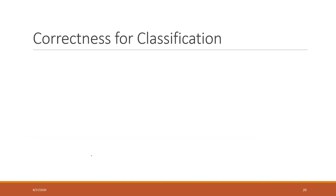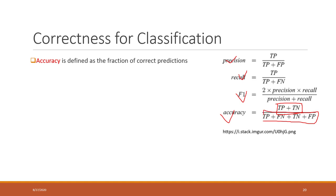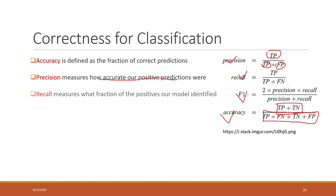Based on the confusion matrix, we can calculate several measures: accuracy, precision, recall, and F1 score. Accuracy is defined as the total correct predictions divided by the total number of records — the fraction of correct predictions. Precision is the true positive divided by true positive plus false positive, measuring how accurate our positive predictions are. Recall is true positive divided by true positive plus false negative, measuring the fraction of positives our model identified.